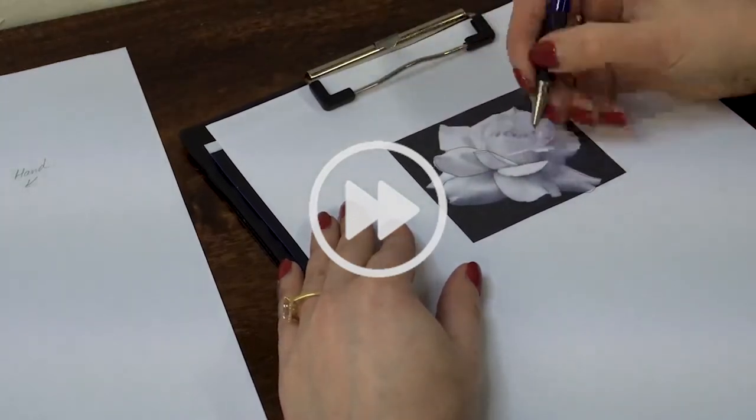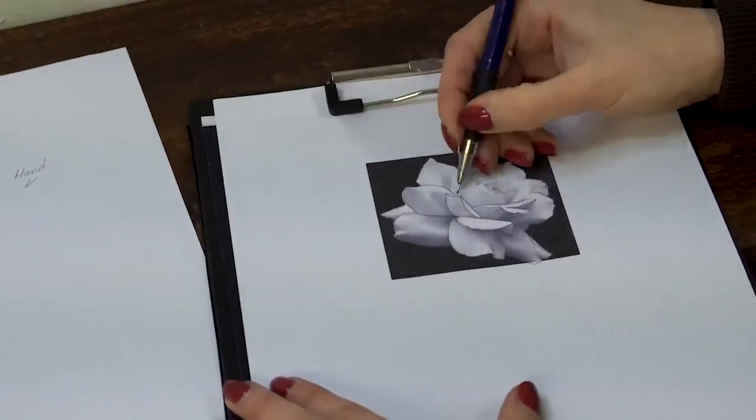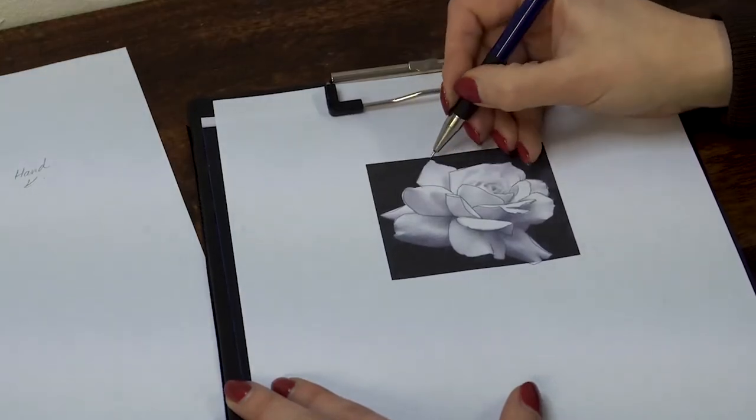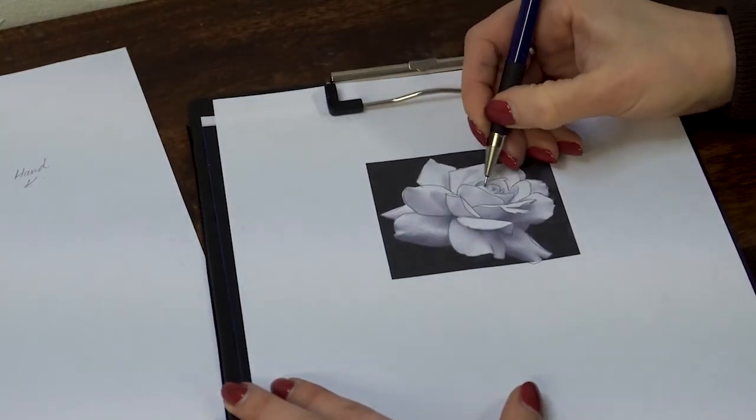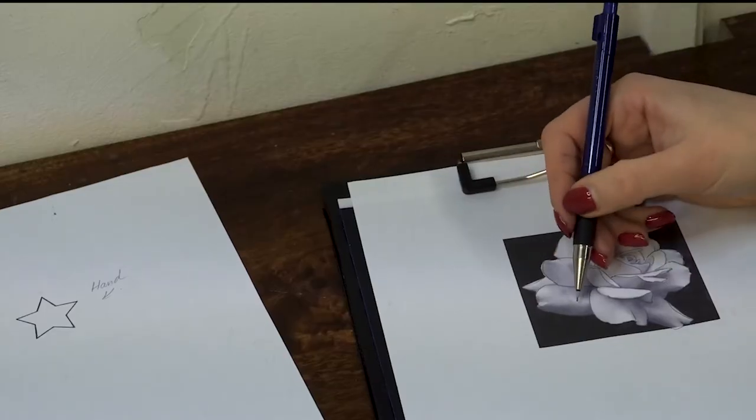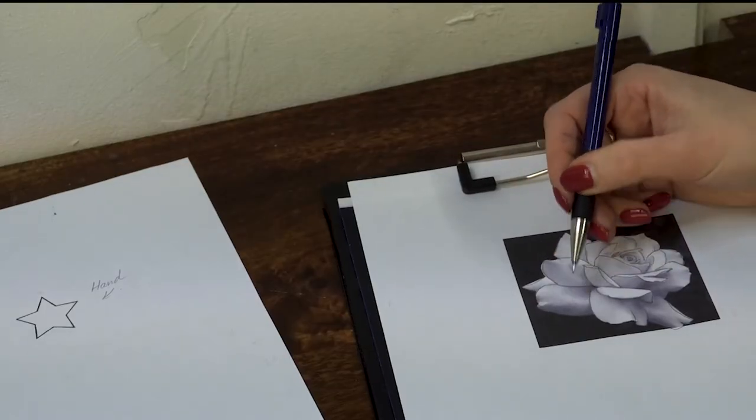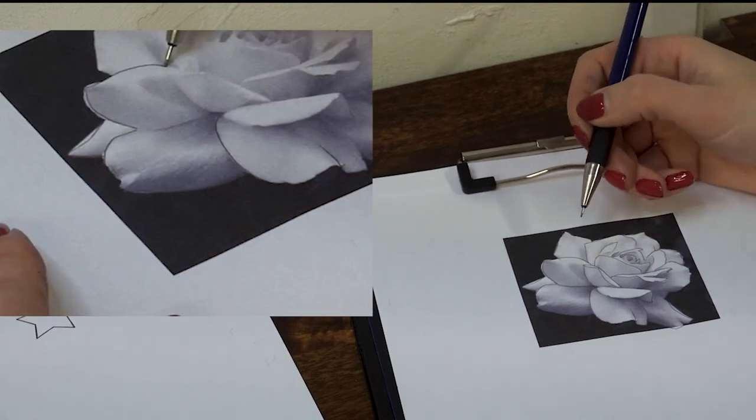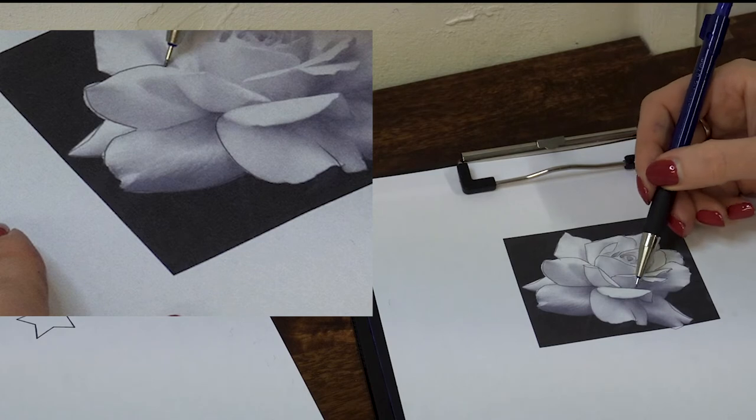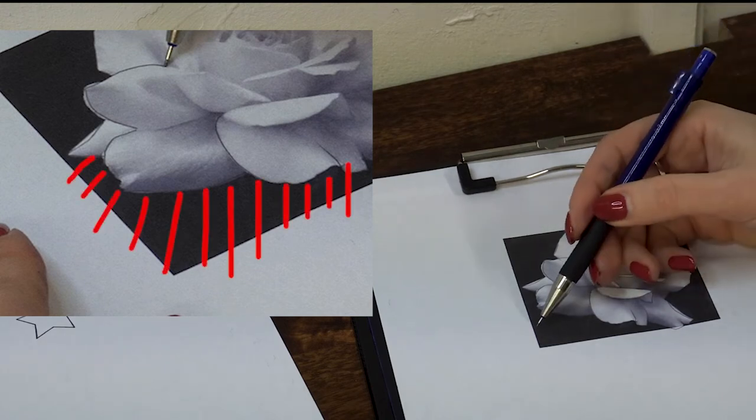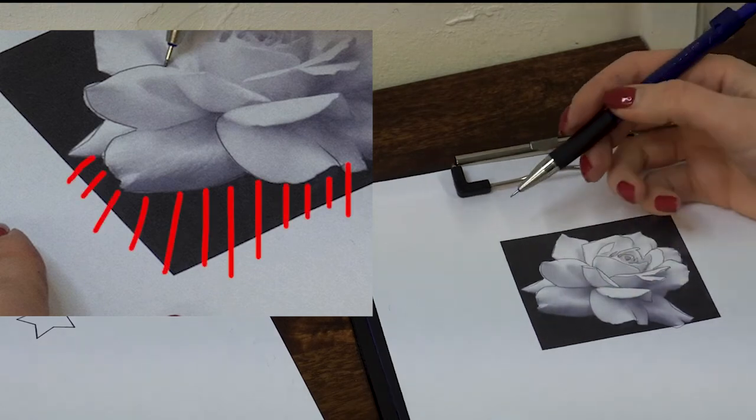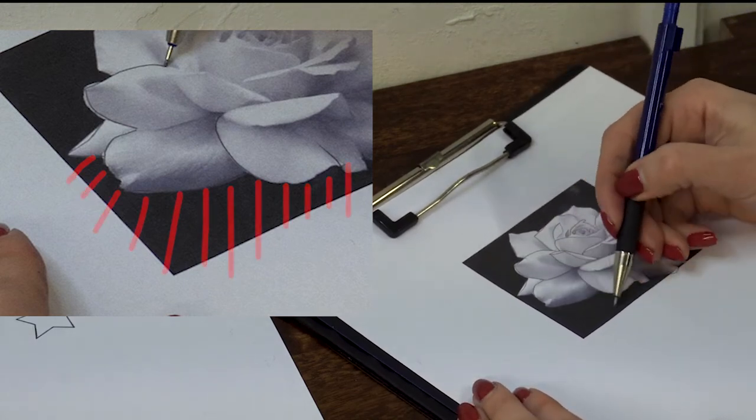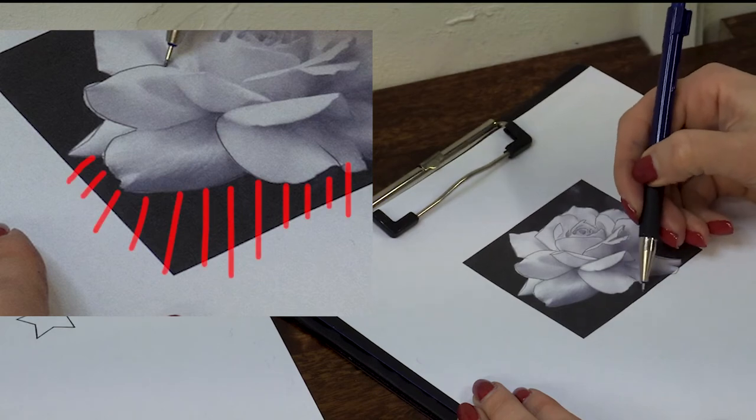An interesting thing about this design for you might be that you can also stencil, I call it mapping, map out areas where there is shading on the rose, shadows from petal on the petal, and a background as well. Draw lines around the rose to indicate that this is a background and it's dark.